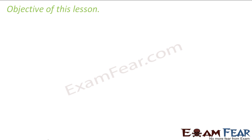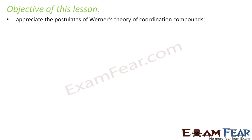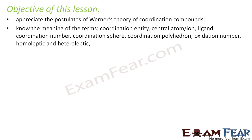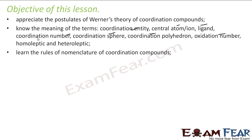The objective of this lesson is to appreciate Werner's theory on Coordination Compounds. We will learn the meaning of various terms such as Coordination Entity, Central Atom, Ligands, Coordination Number, Coordination Sphere, Coordination Polyhedron, Oxidation Number, and Homoleptic and Heteroleptic Ligands. We will understand these terms and learn the rules of nomenclature for Coordination Compounds.